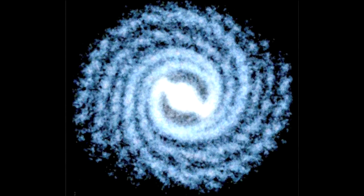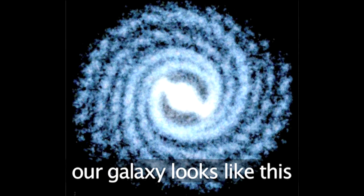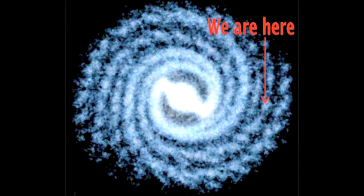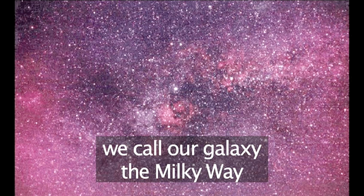Our solar system of the sun and planets lives in a galaxy very similar to this one. We are placed about three quarters of the way out from the center of our galaxy. We call our galaxy the Milky Way.